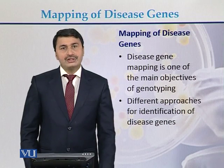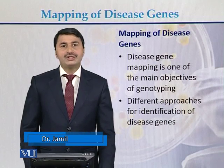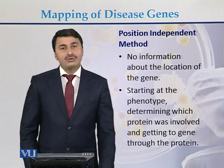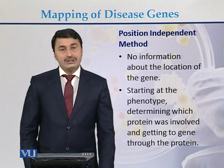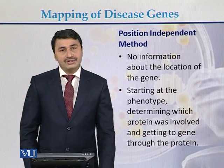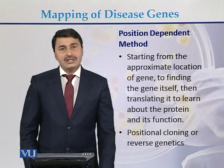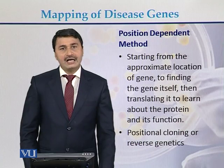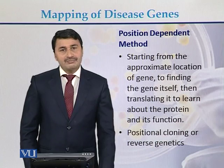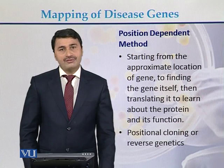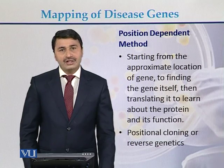There are two different methodologies: position independent and position dependent. In the position independent method, usually no information is available about the location of the disease gene — starting with the phenotype, determining which protein is involved, and ultimately identifying the gene based on protein information. In the position dependent method, we start with the approximate location of the gene, ultimately find the gene itself, then translate the gene product into proteins and study the function of that protein.